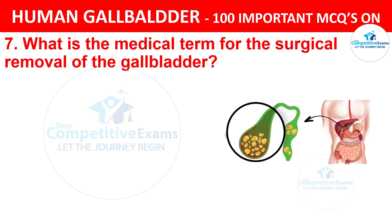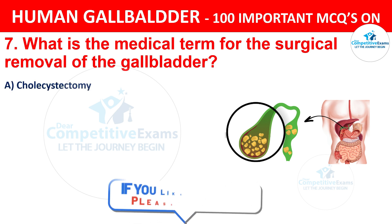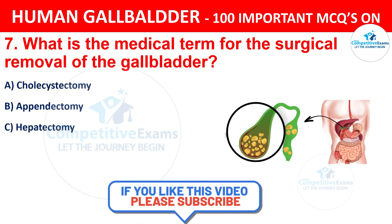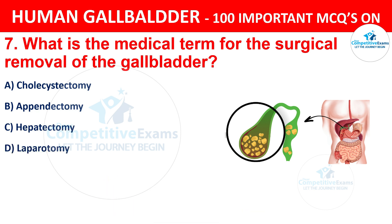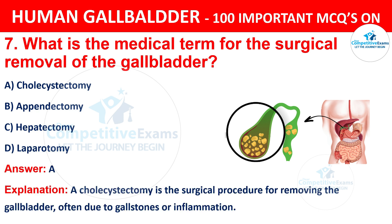Question 7: What is the medical term for the surgical removal of the gallbladder? Your options are: A) Cholecystectomy, B) Appendectomy, C) Hepatectomy, D) Laparotomy. The correct answer is A, i.e. Cholecystectomy. Cholecystectomy is the surgical procedure for removing the gallbladder, often due to gallstones or inflammation.